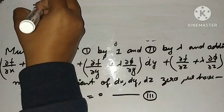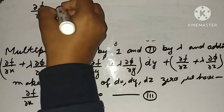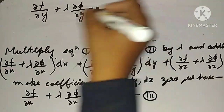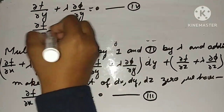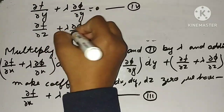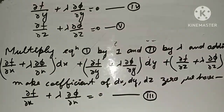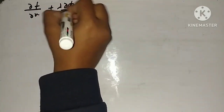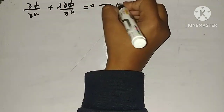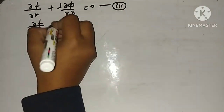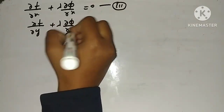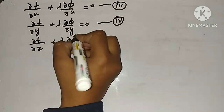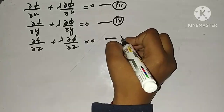Equation third: ∂f/∂x + λ·∂φ/∂x = 0. Equation fourth: ∂f/∂y + λ·∂φ/∂y = 0. Equation fifth: ∂f/∂z + λ·∂φ/∂z = 0.